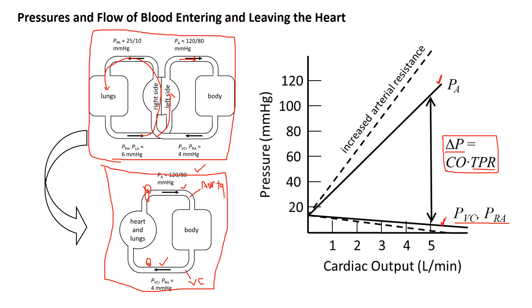The pressure difference equals cardiac output times total peripheral resistance. So cardiac output and the pressure difference are proportional — the higher the cardiac output, the greater the pressure difference. Because TPR is constant, the difference between aortic and vena cava pressure increases in proportion to increasing flow. For example, comparing a cardiac output of 2.5 to one of 5, the pressure difference is twice as great at 5 as at 2.5. Double the flow, double the pressure gradient.